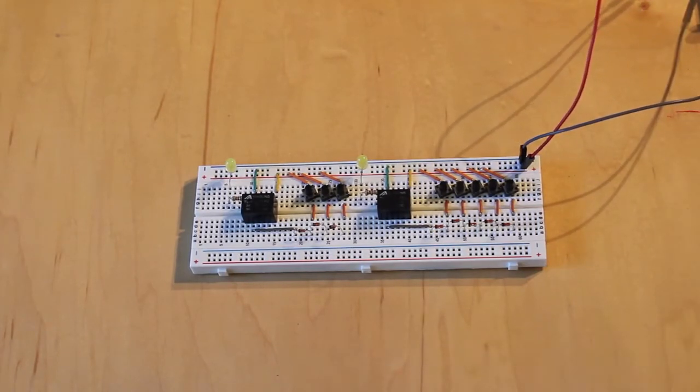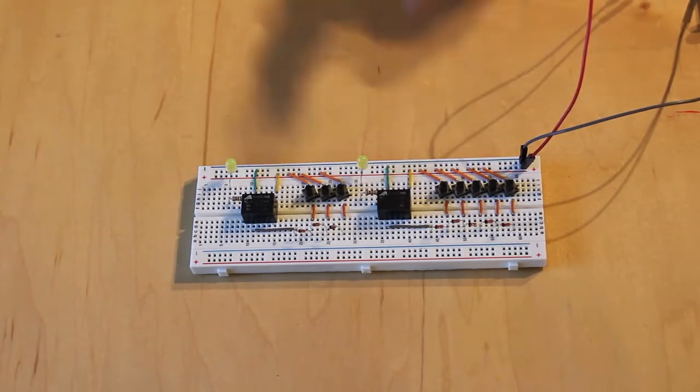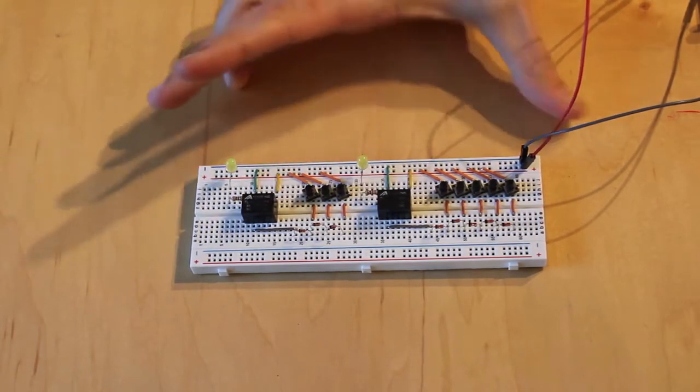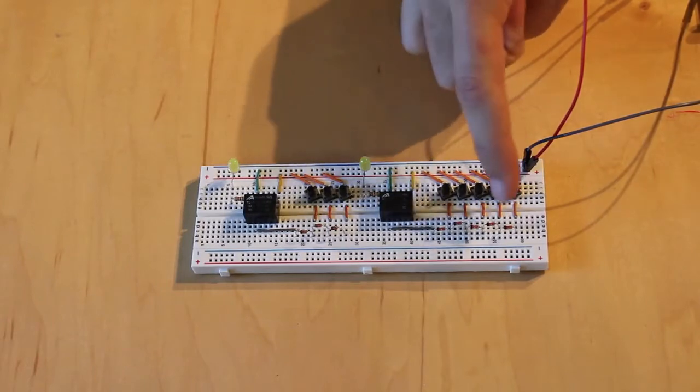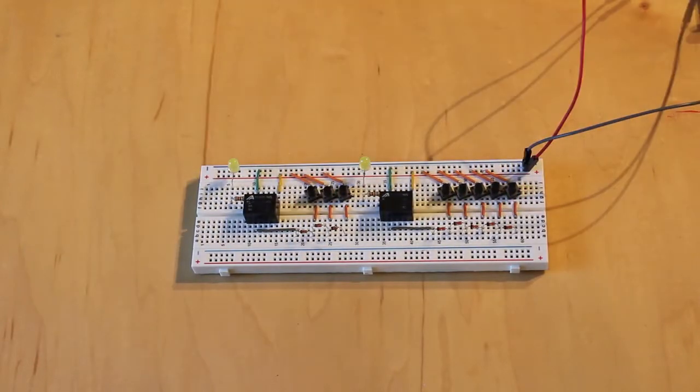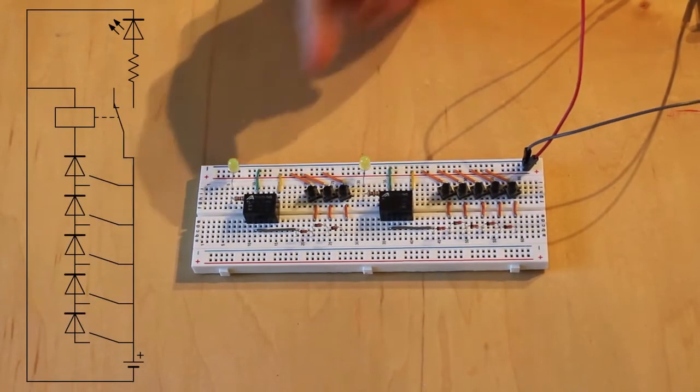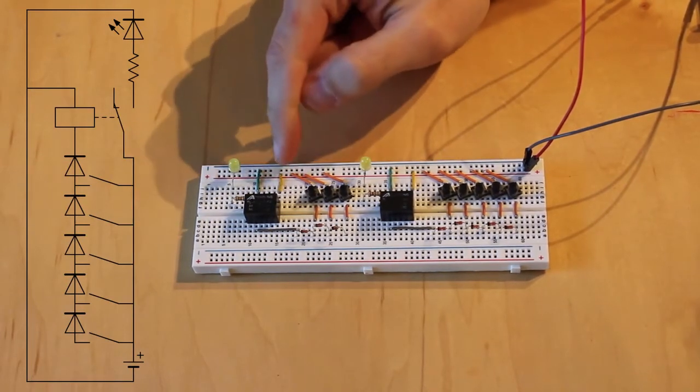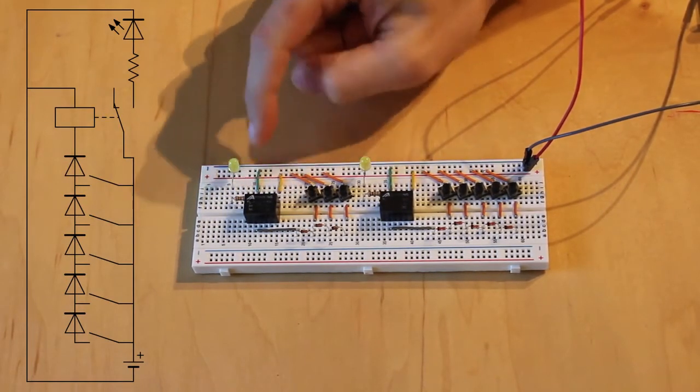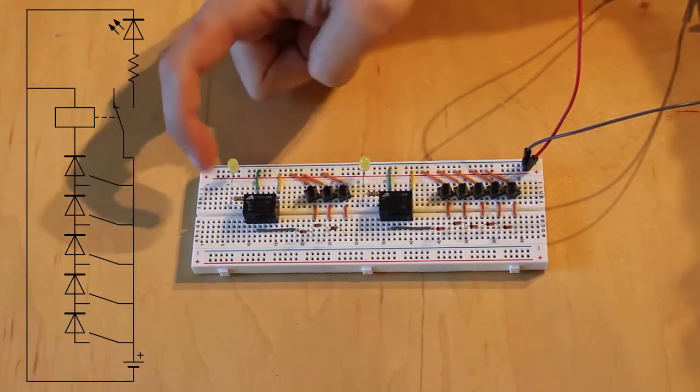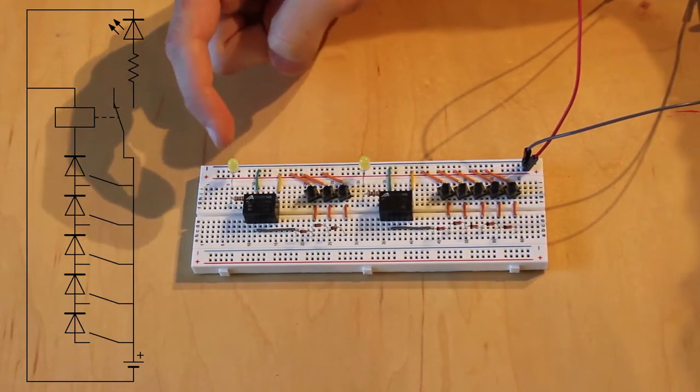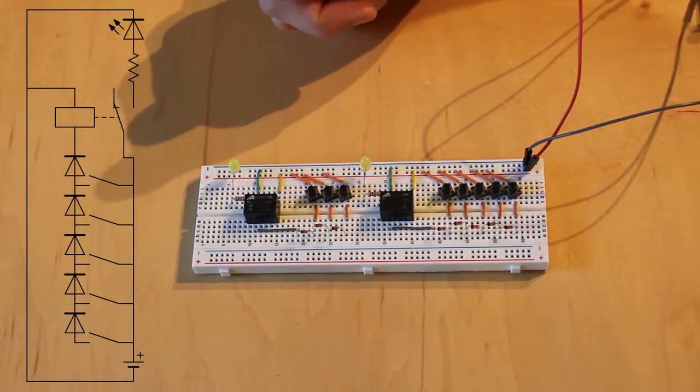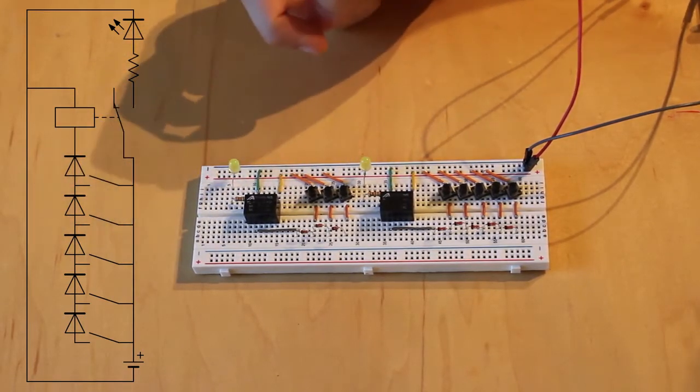So you can see here on my breadboard that I have two relays set up with two LEDs and a collection of buttons and diodes. Now the relays are set up with 5 volts coming into the common pin. The coil is grounded out through these green wires and the normally open has a 1,000 ohm resistor feeding into our LED.